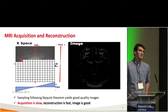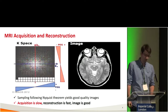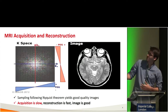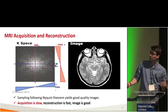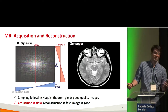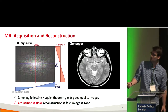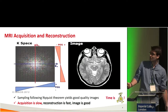MR data is acquired in k-space, also known as the frequency domain or the Fourier domain. If we sample the k-space data following the Nyquist theorem and apply the inverse Fourier transform, we get an image of good quality. In this case, acquisition is slow, reconstruction is fast, and the image is good — but unfortunately, time is money. Acquisition is very slow.